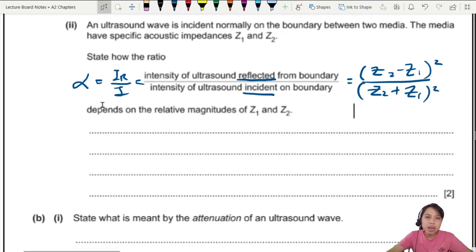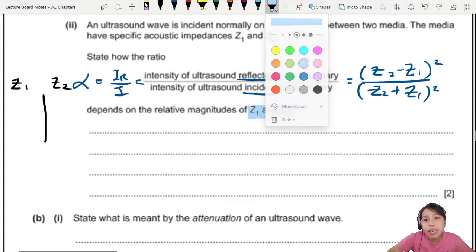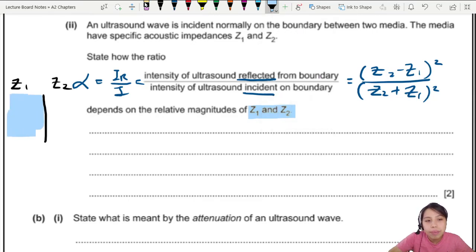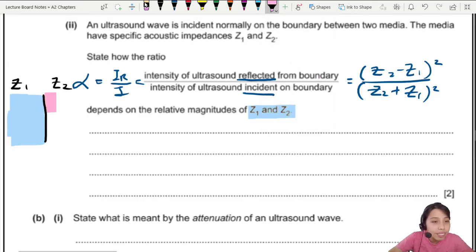So how does the ratio depend on the relative magnitude? So you need to compare Z1 and Z2. What happens if Z1 and Z2 are very similar or very different? We've got medium 1, medium 2. Maybe one side is water. Maybe one side is muscle. Humans have got a lot of water. Two different mediums. How do you compare them?